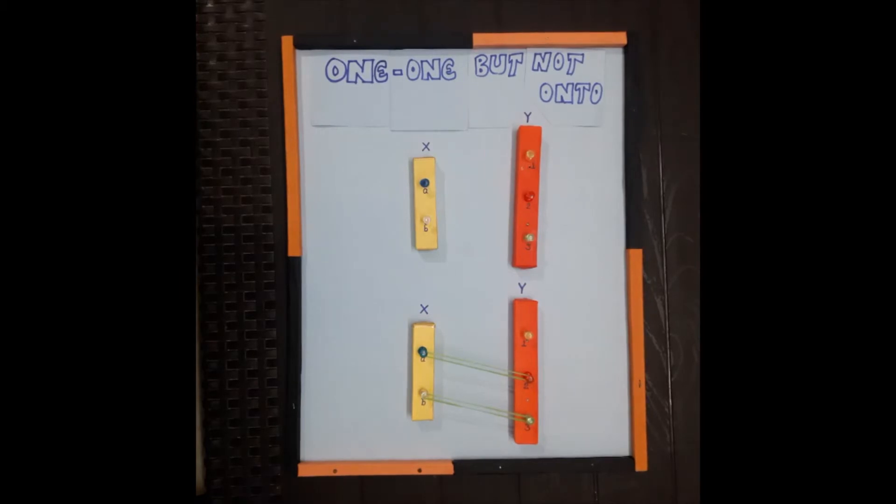Whereas the function is said to be an onto function or a surjection if every element of y is the preimage of some element of x.